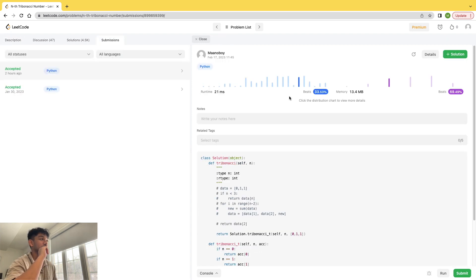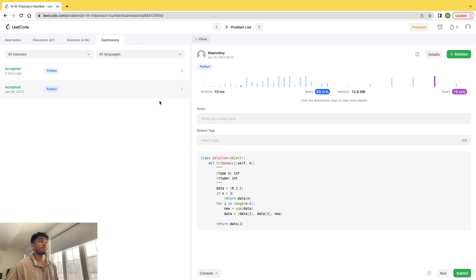So this was my solution with tail recursion. It beats 33% of submissions, and memory is also pretty good too, because it beats like almost 70%. If we look at the loop that we use, it beats 93%, but it uses a lot more memory than other submissions.